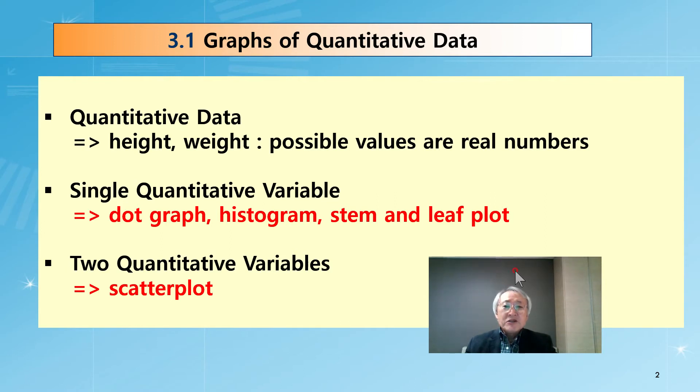In case of a single quantitative variable, we usually use dot graph, histogram, stem and leaf plot. If there are two quantitative variables, then we can use a scatter plot. I think most of these graphs you are familiar with.